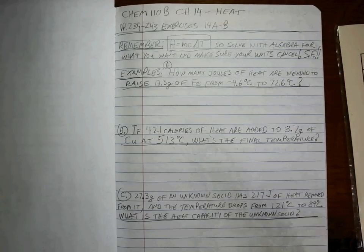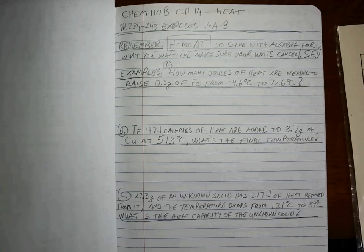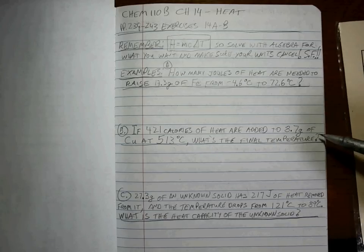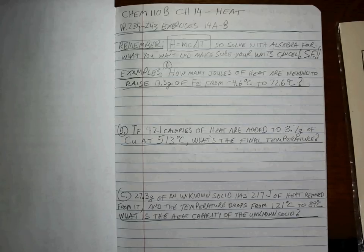As always, be careful with sig figs. So let's just jump right into a problem. How many joules of heat are needed to raise 17.3 grams of iron from -4.6°C to 72.6°C? Your job, also take a look at B and C, hit your pause, try the problems, then come on back and we'll go ahead and solve.